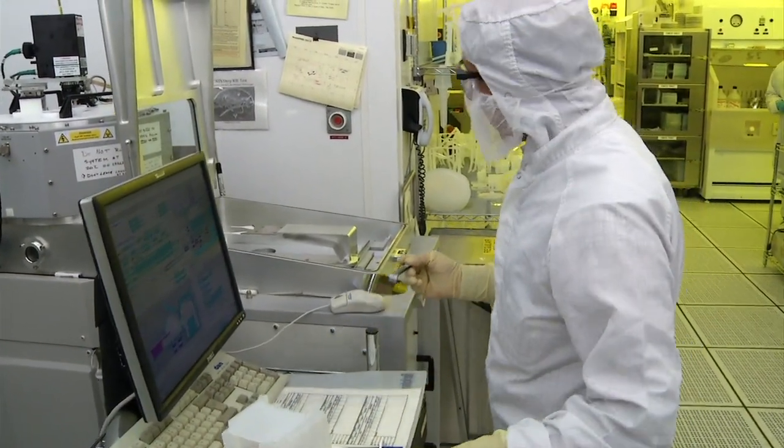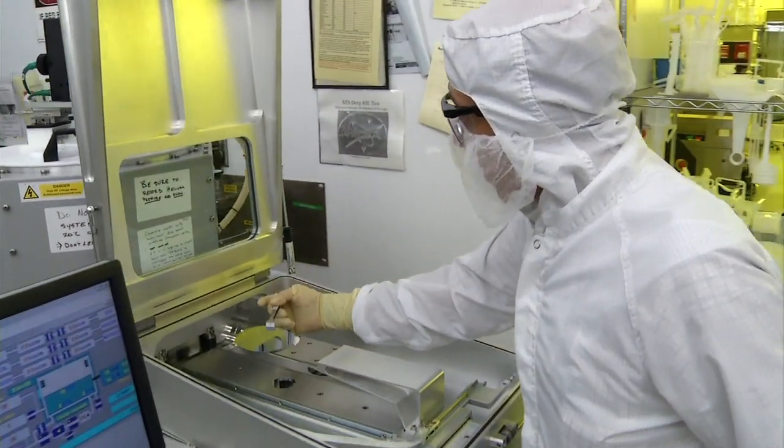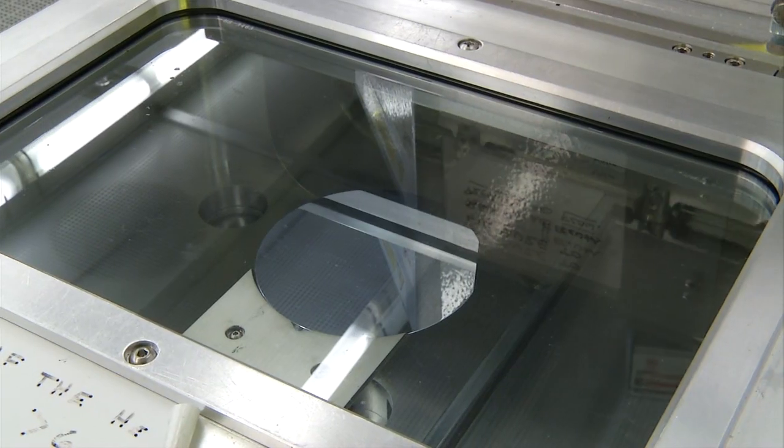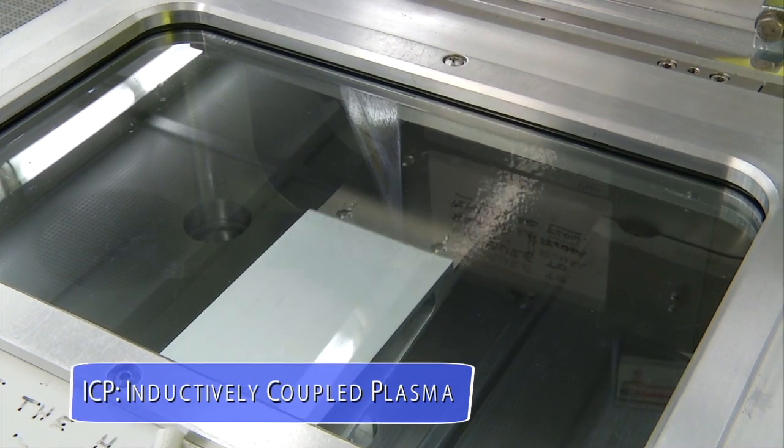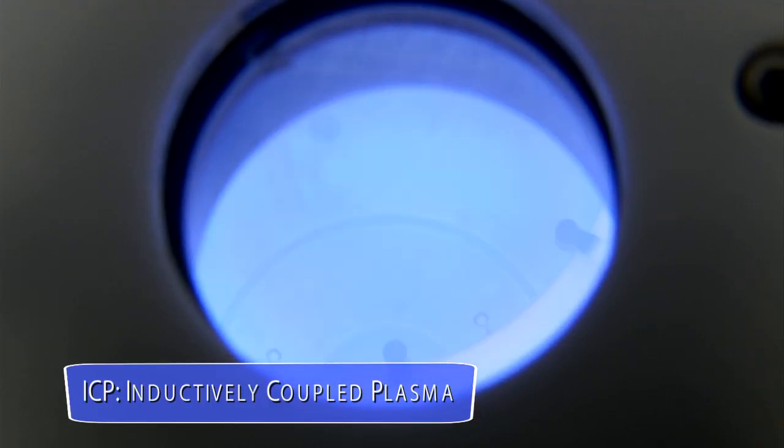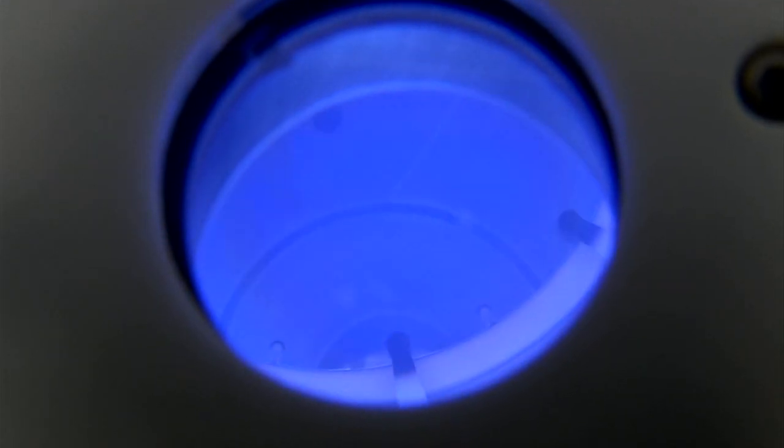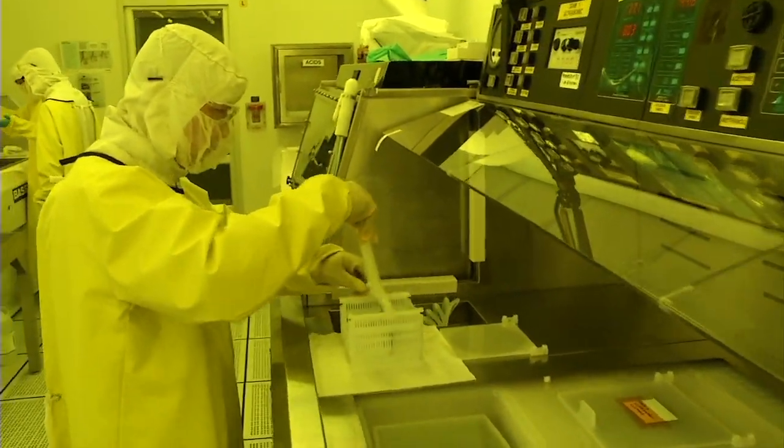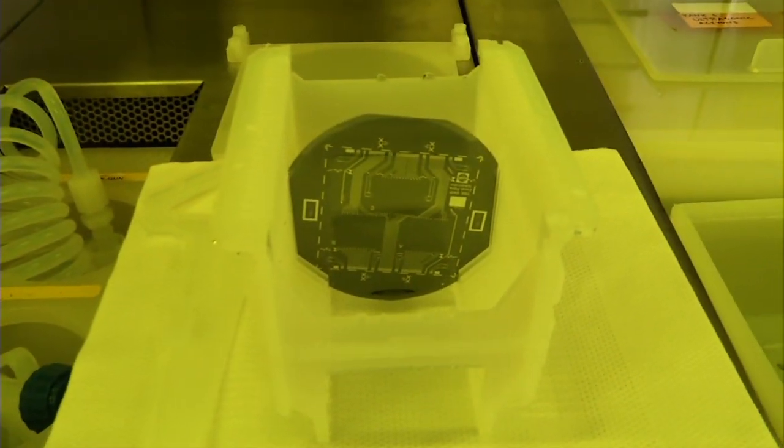In one of the most fascinating examples, the deep reactive ion etcher uses short etching and passivation cycles in a high-power ICP chamber to etch silicon hundreds of microns deep with 100 to 1 aspect ratios. After etching, the photoresist mask is stripped off in a solvent and the substrate is ready for deposition of the next layer of material.